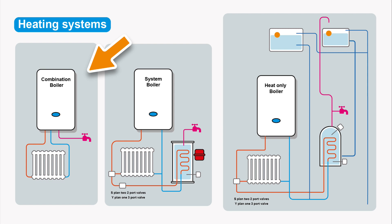Being a pressurized system, the combi boiler will have an expansion tank - usually inside the boiler. The hot water is fed from the cold main and heated on demand; you're not using the same water for your hot water and your radiators - they're completely separate.